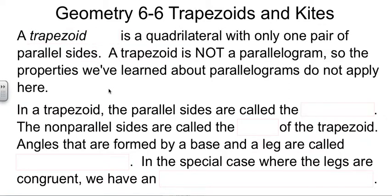First off, we need to know what a trapezoid is. It's a special kind of quadrilateral with only one set of parallel sides. It's not a parallelogram, so the properties we've learned about parallelograms this chapter don't apply to this guy. He's only got one set of parallel sides.